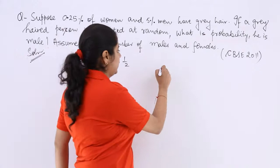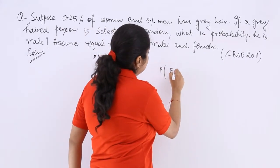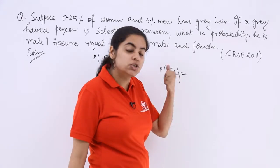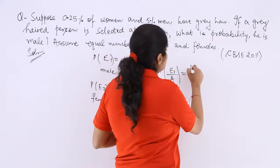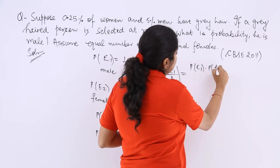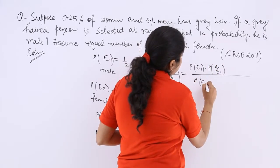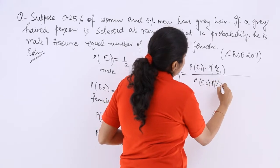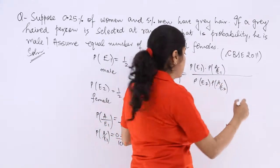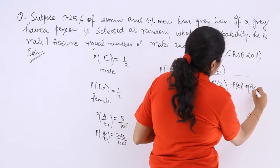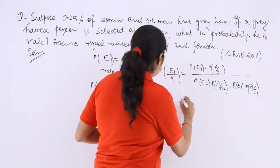Now we have to find out the probability that the grey haired person should turn out to be a male. So it will be probability of E1 multiplied by probability of A with respect to E1. Simply you have to put the values.